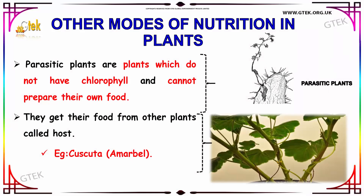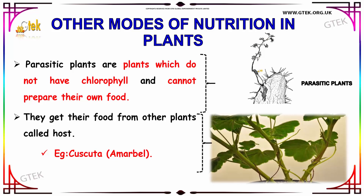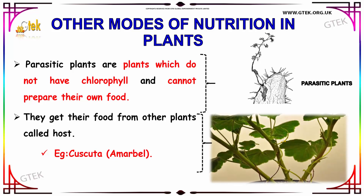Let us see about other modes of nutrition in plants. Parasitic plants do not have chlorophyll and cannot prepare their own food. Because there is no chlorophyll, the leaves do not appear green, and they get their food from other plants called the host. An example of a parasitic plant is Cuscuta, also known as amarbel.